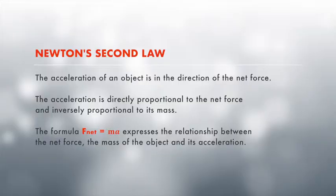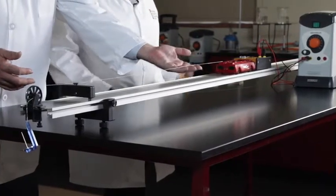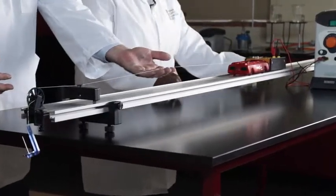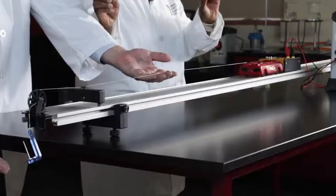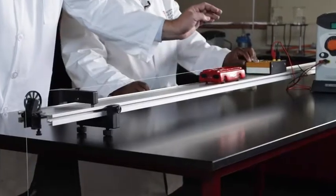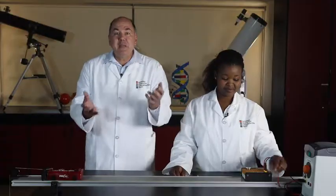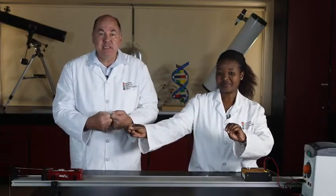The basic setup is a trolley on a track attached with a light, inextensible string to a weight that hangs over a pulley. When the trolley is released, the weight pulls the trolley down the track. The string must be light so it has almost no mass compared with the weights and the trolley. It must not stretch — we say it must be inextensible.